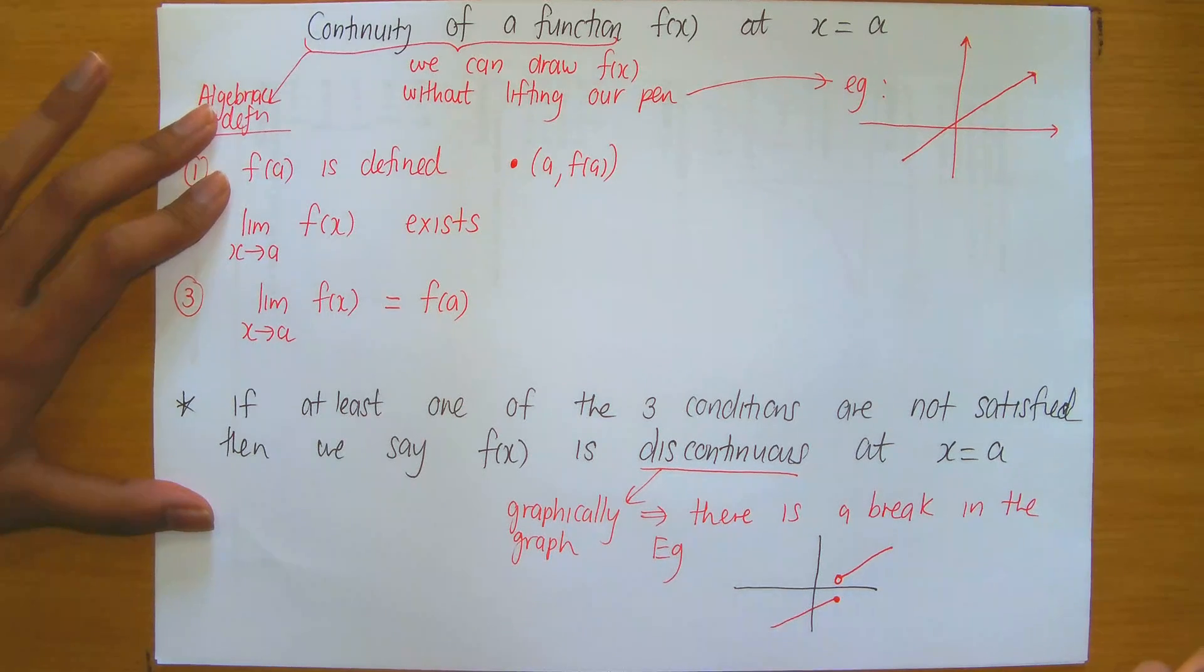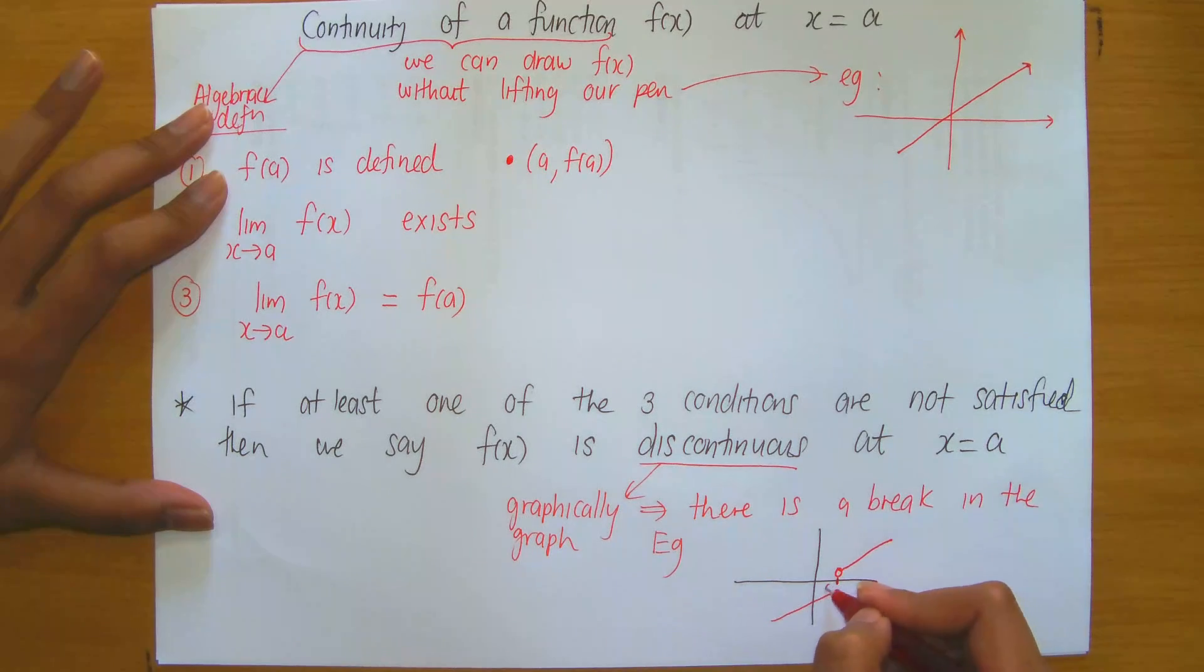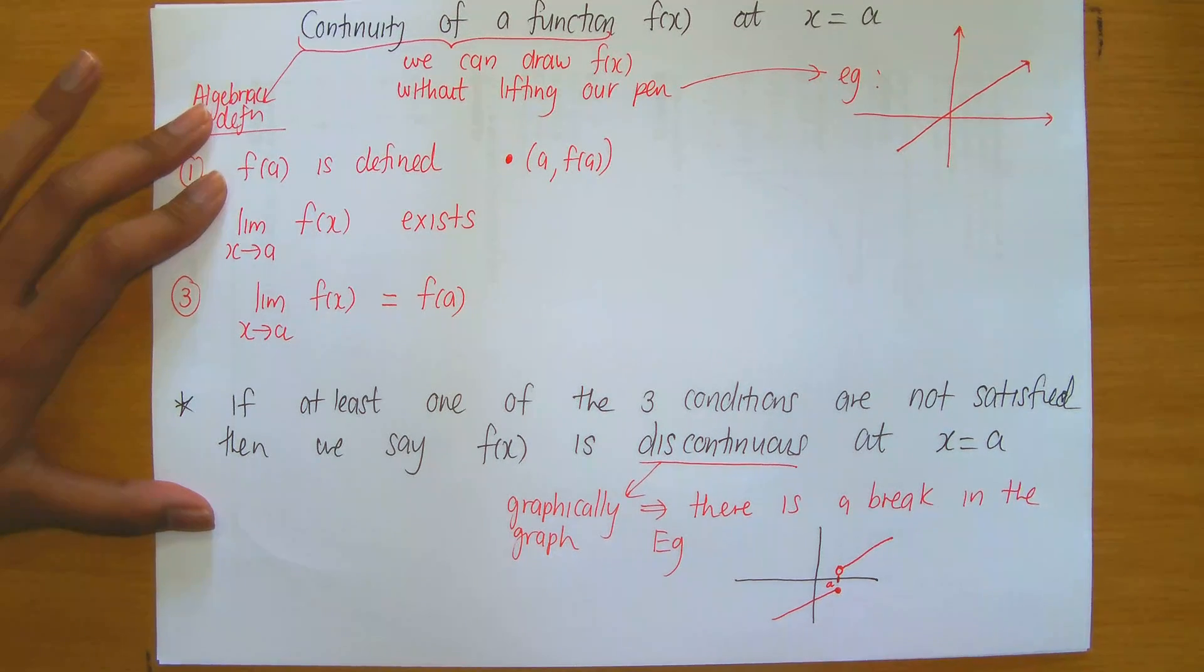jump above to continue drawing the graph. This is a graph that is discontinuous at x equals a.